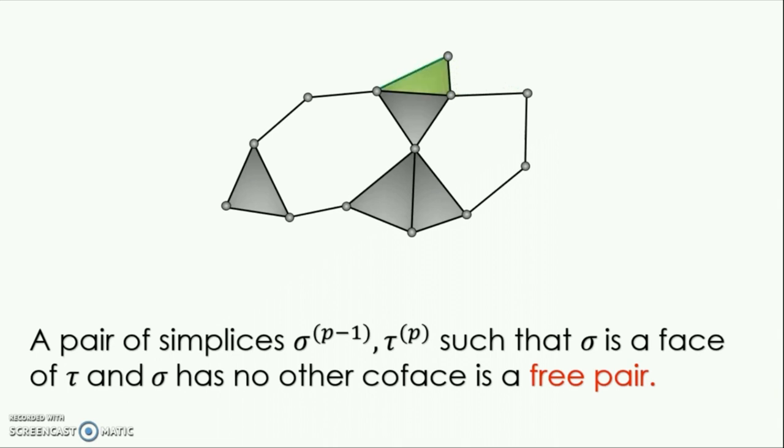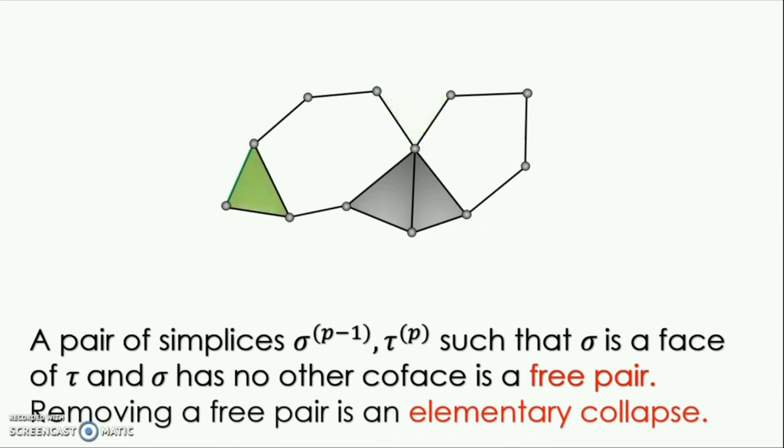We'll remove that free pair, and then we'll find another free pair and remove that. The removal of a free pair is called an elementary collapse, and so what we're doing here is performing elementary collapses until we cannot perform any more. At this point, we are stuck, and there are no more free pairs to remove.